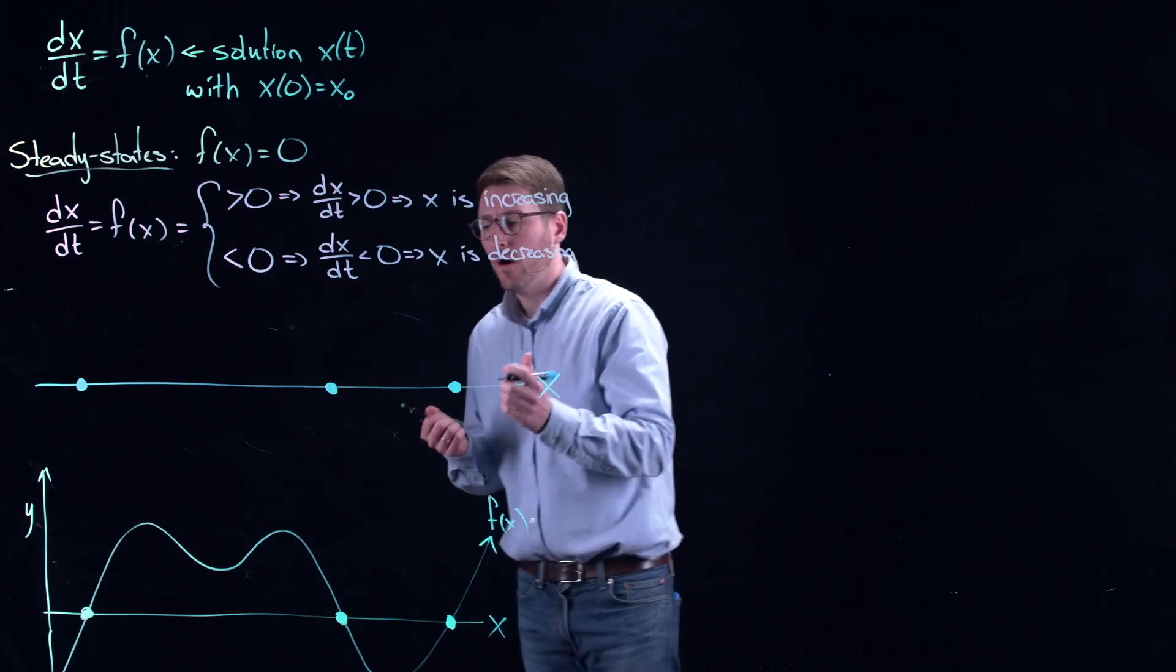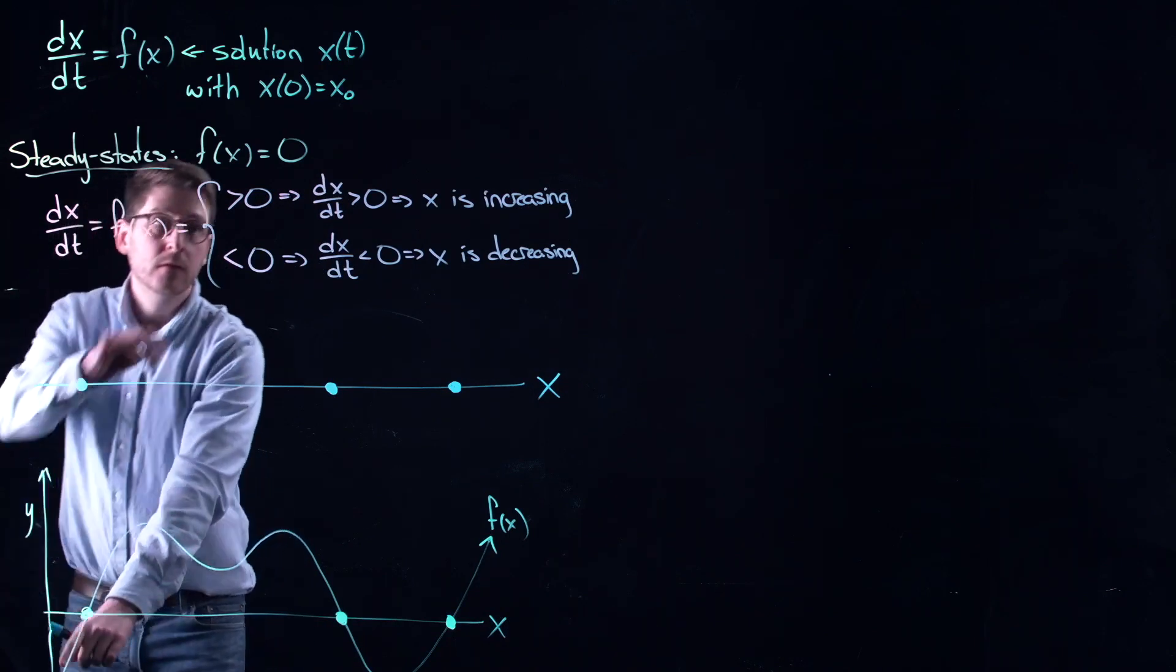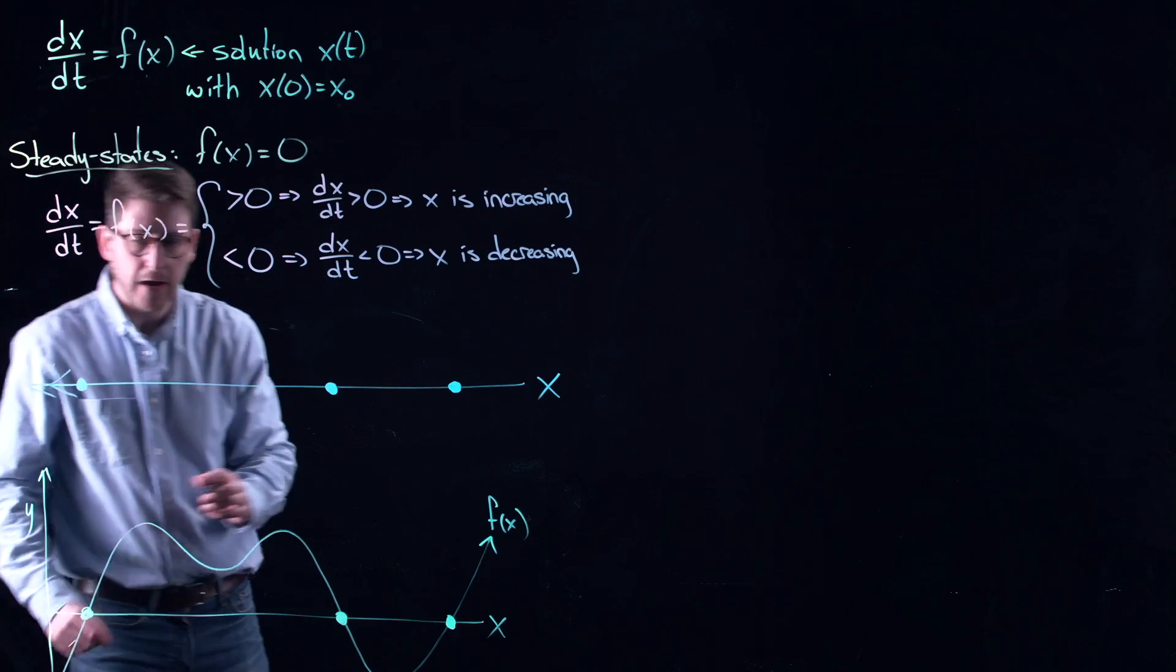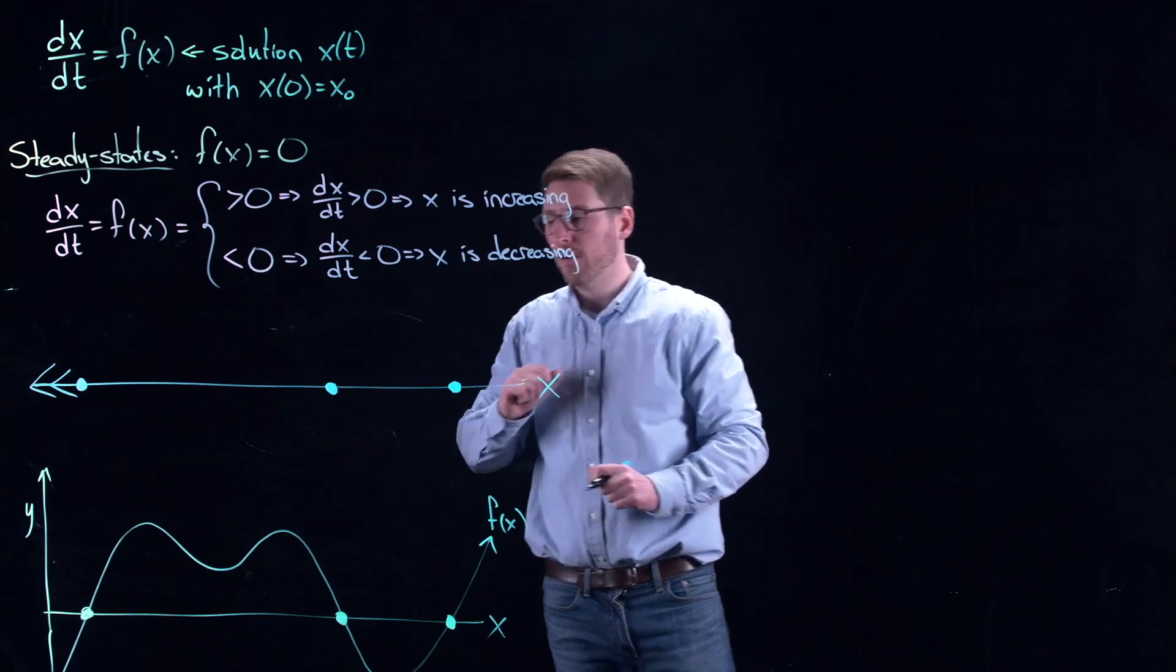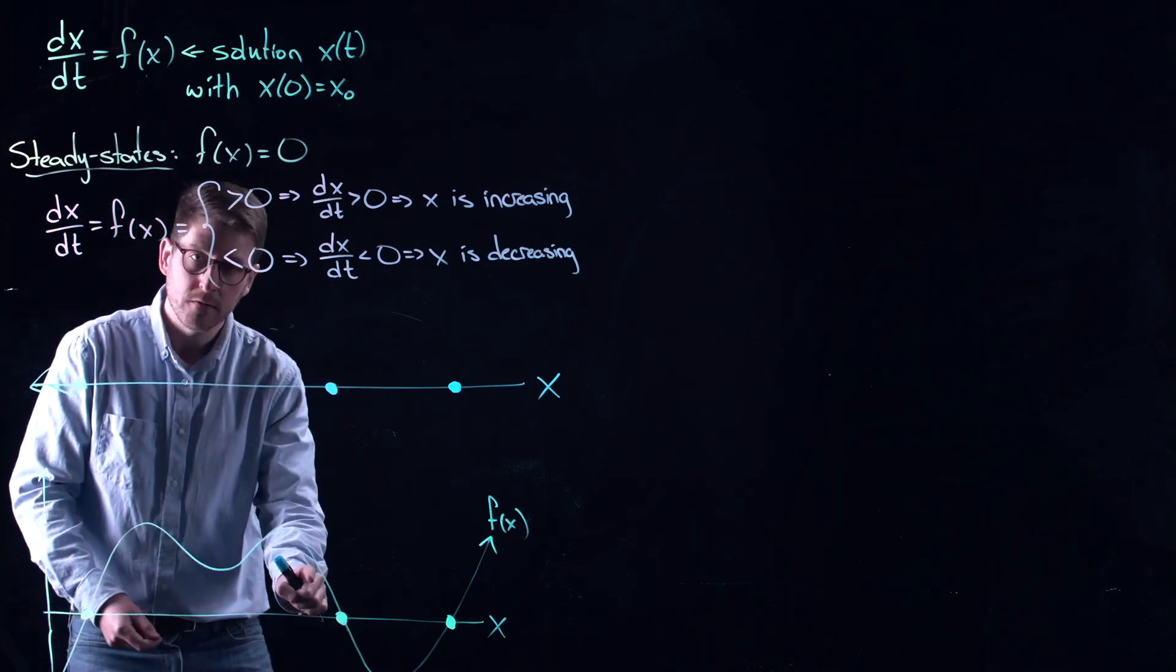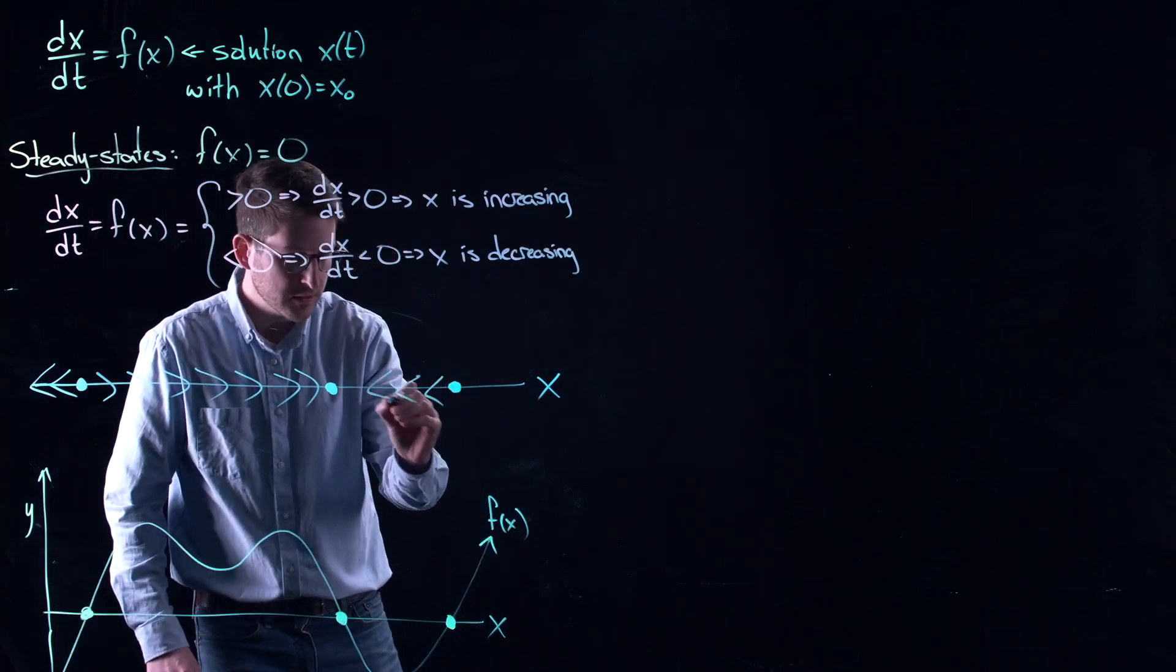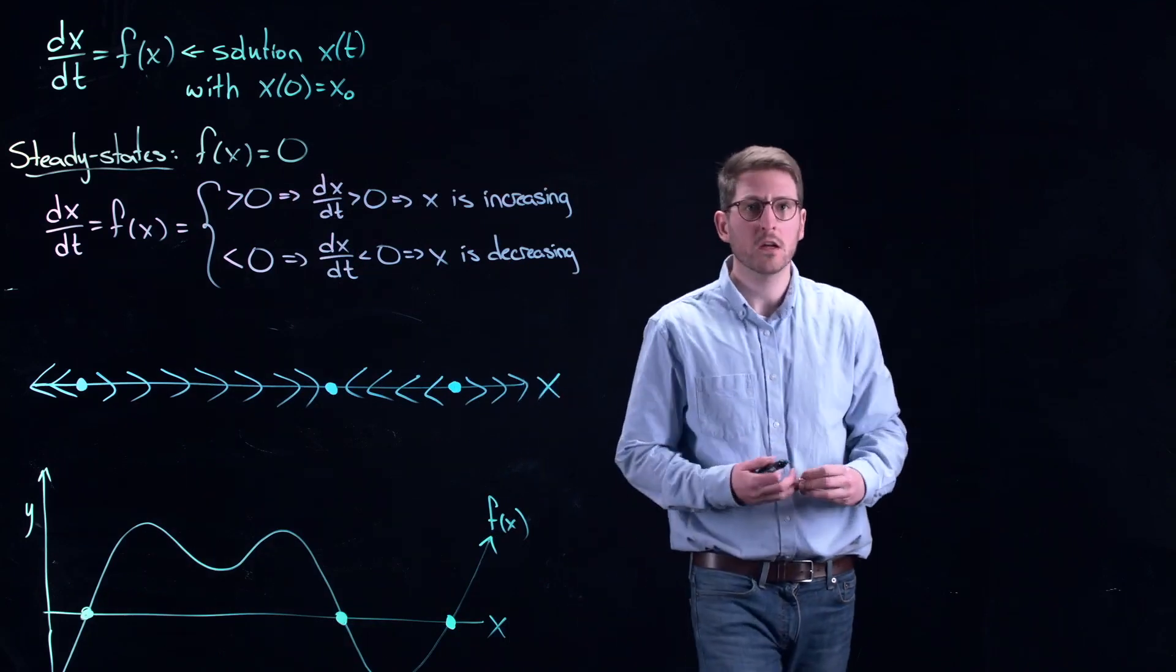These are the steady states or the equilibria of my solution, or of my differential equation. Now what I can also see is that when f is negative, right here, then x is decreasing. On a number line, that means moving to the left, which I could indicate with these little arrows. Those arrows tell me where the solution will be going. Tells me I'm moving to the left if I am to the left of this equilibrium. Same thing, in between these two equilibria, I am positive. It means I'm moving to the right. I'm increasing my value of x. In between these two equilibria, I'm negative. I am moving to the left. And finally, outside of those equilibria, I am moving to the right.